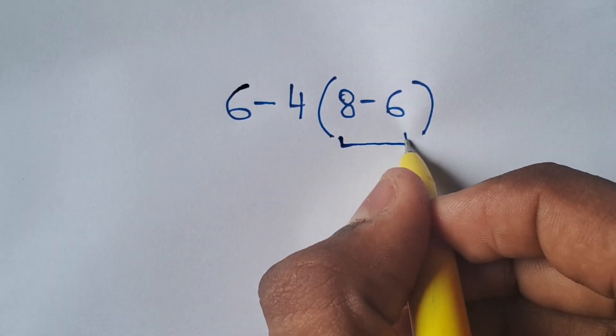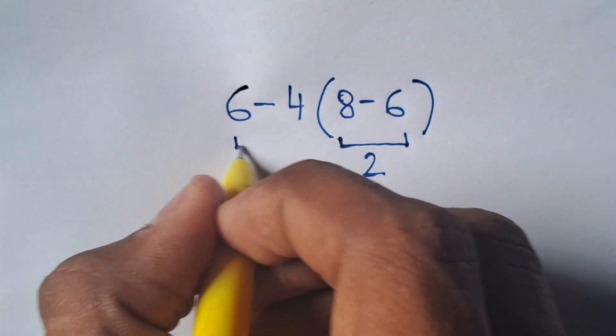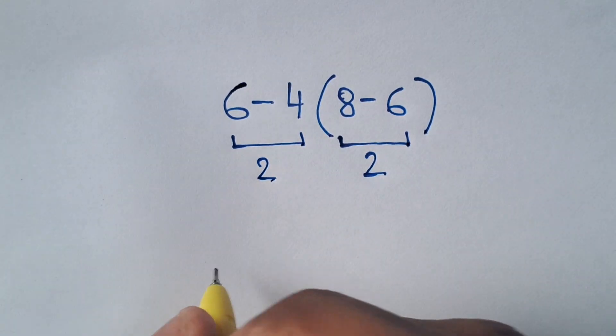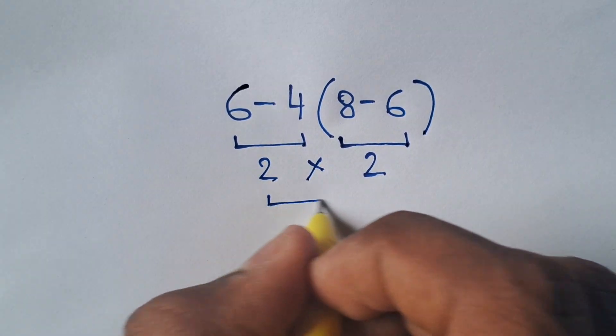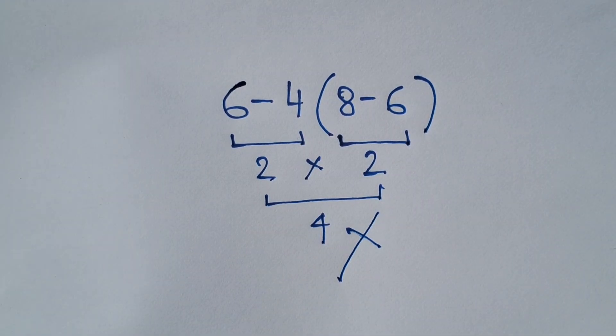8-6 is equal to 2 and 6-4 is also equal to 2. So 2 times 2 is equal to 4. But it's not the correct answer for this expression.